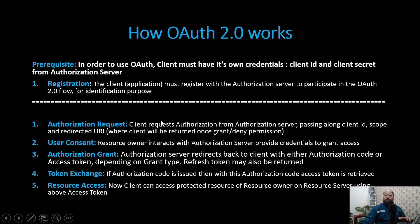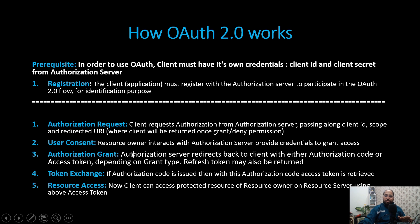After that, if the authorization server is able to identify the client by client ID and client secret and everything looks good, it will show a screen where the resource owner needs to enter the credentials. After that, the resource owner needs to grant the permissions. Once permissions are granted, the authorization server redirects back to the client — specifically to the redirect URI that was mentioned. The authorization server will be returning an authorization code or access token depending on the grant type, and a refresh token will also be issued.